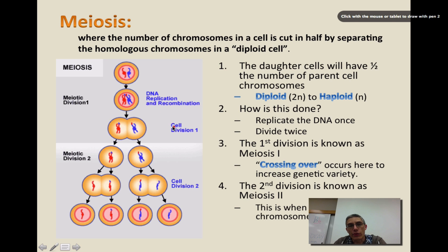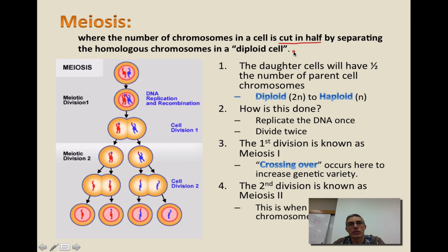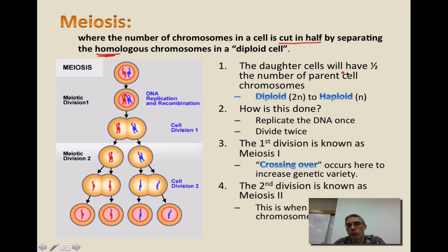The process that actually allows us to get to that haploid number — cells that only have half the amount of chromosomes — is called meiosis. Meiosis is where the number of chromosomes in a cell is cut in half by separating the homologous chromosomes in a diploid cell. Remember, homologous means same, so we're talking about chromosome sets where we have one from the mom and one from the dad. The daughter cells will have half the number of chromosomes found in the parent cell — you go from a diploid state with a full set to a haploid state with only half. All four of these cells at the end of meiosis only have half the amount of chromosomes.